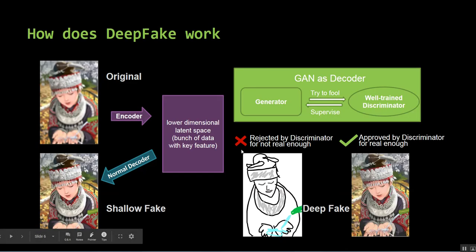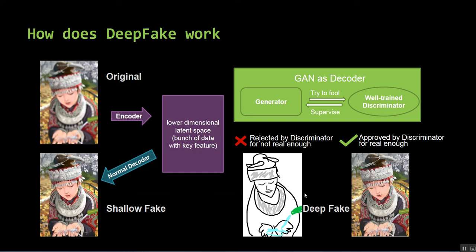As you see here in the slide, the original image is fed to the model and over time the discriminator keeps rejecting the fake image until it starts accepting the image which is very close to the real one.